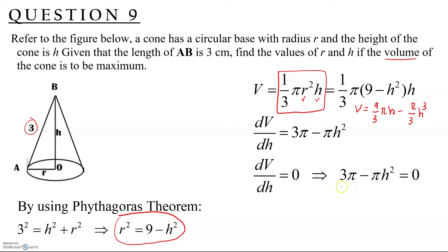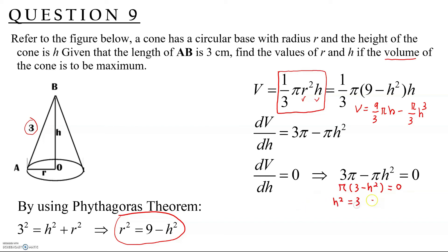Factorizing by taking out π: 3 − H² = 0, so H² = 3, giving H = ±√3. Since H is a length, we take the positive value: H = √3.